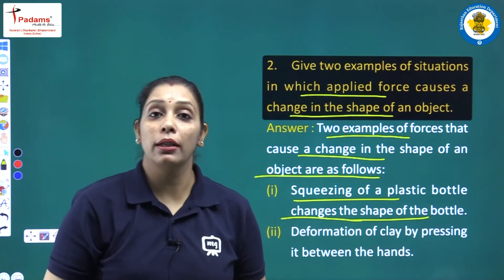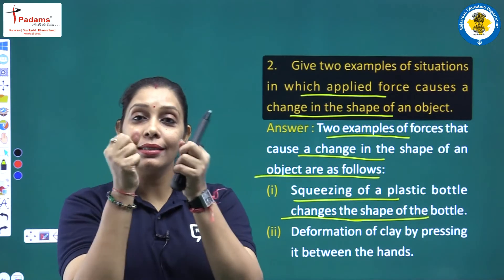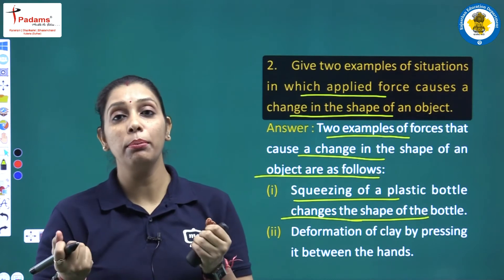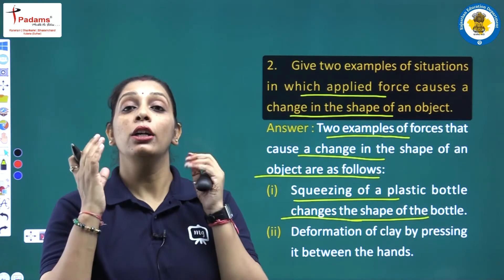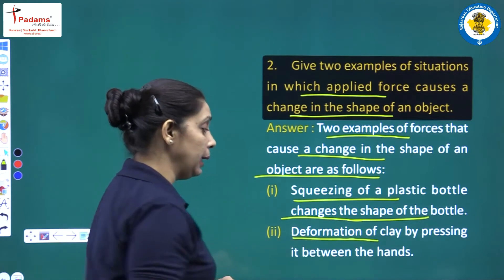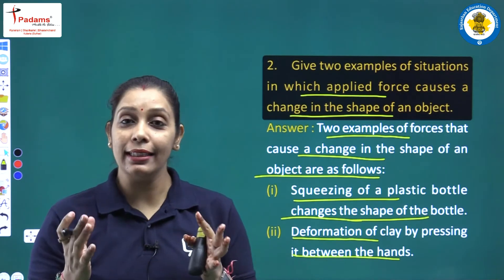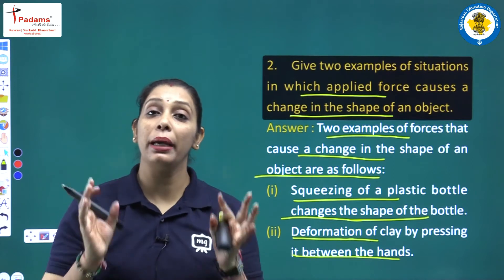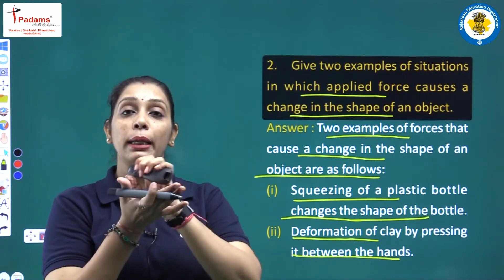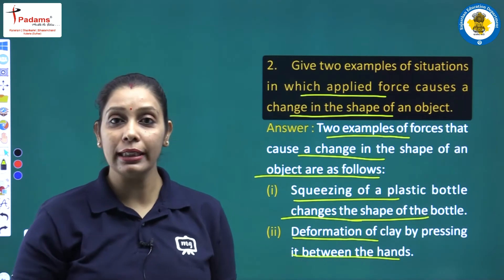First example: squeezing a plastic bottle changes the shape of the bottle. When you purchase a water bottle from the market and after using it you squeeze the bottle — this is an example of change in shape of an object. Second example: deformation of clay by pressing it between the hands. When you play with clay and prepare different objects by pressing the clay between your hands, this causes a change in the shape of the clay.